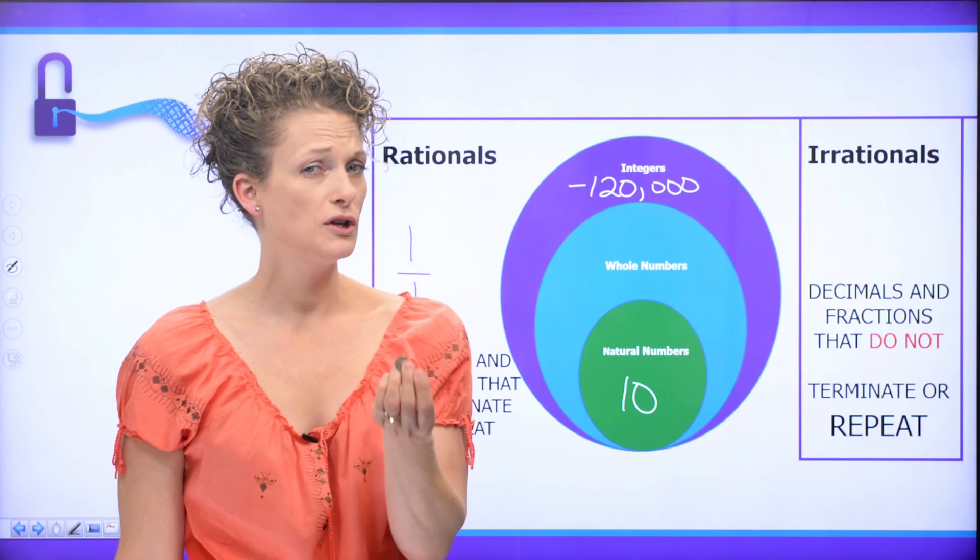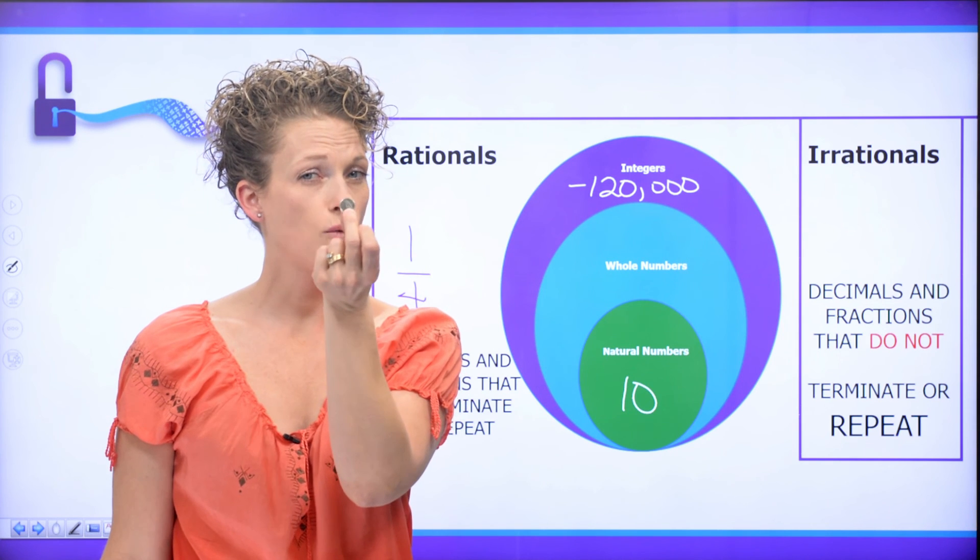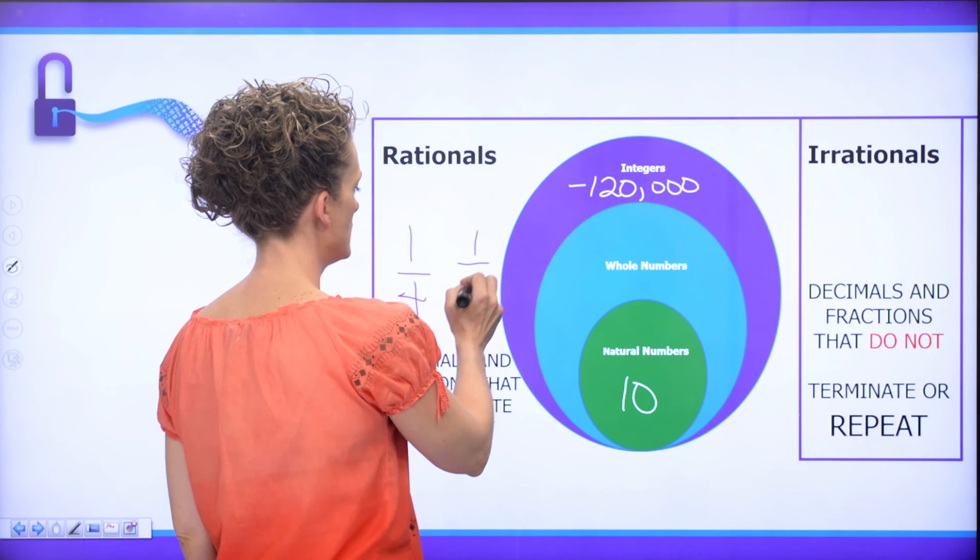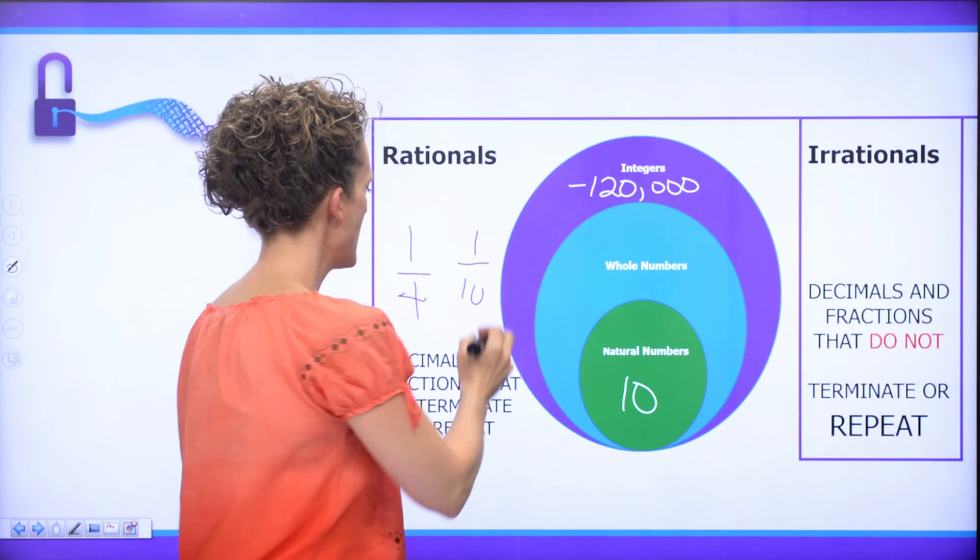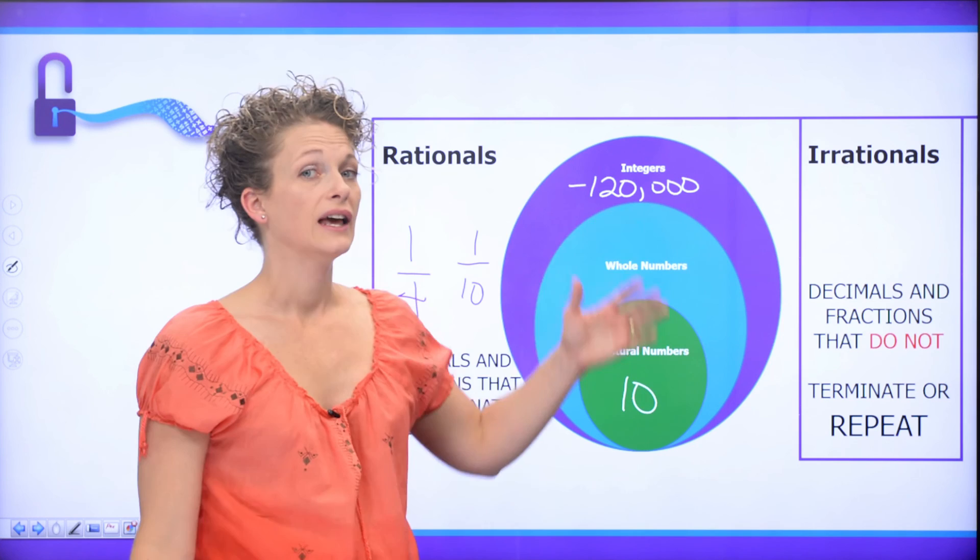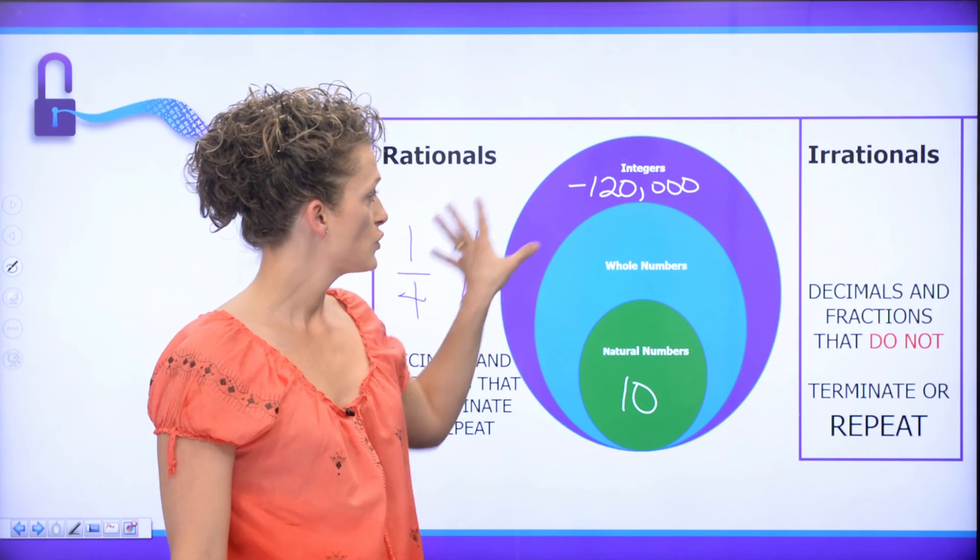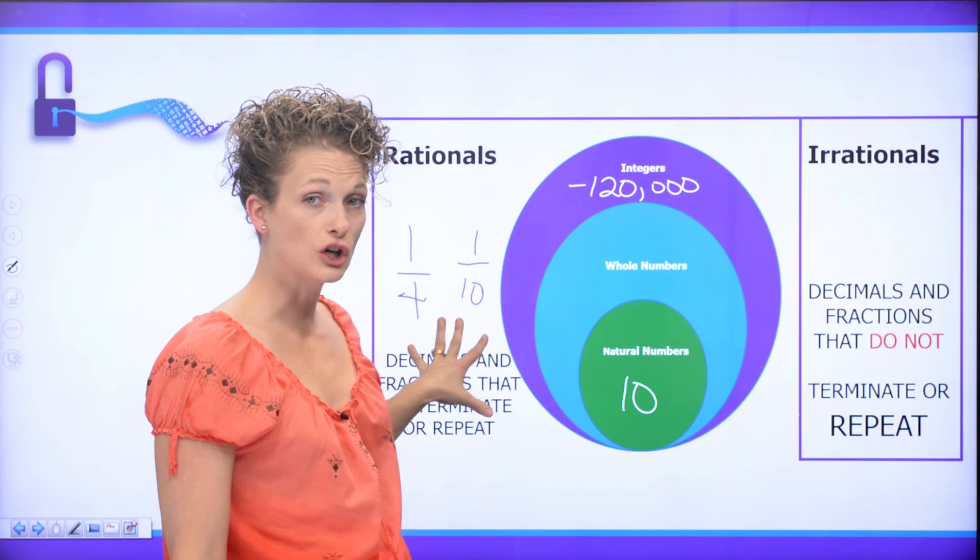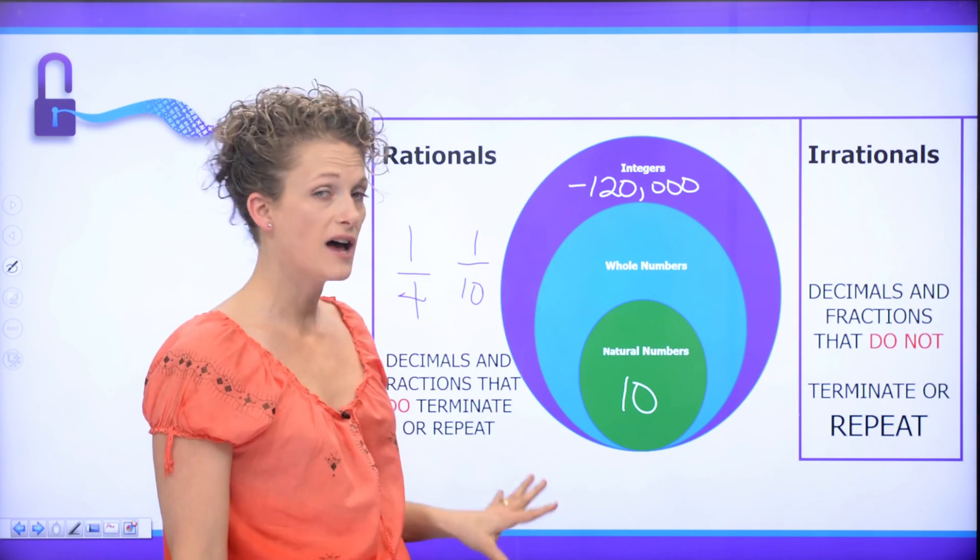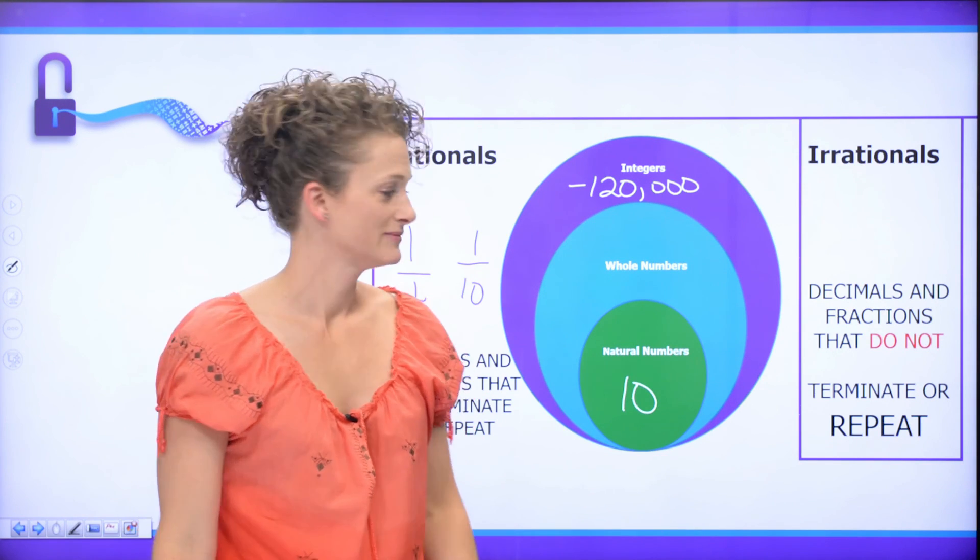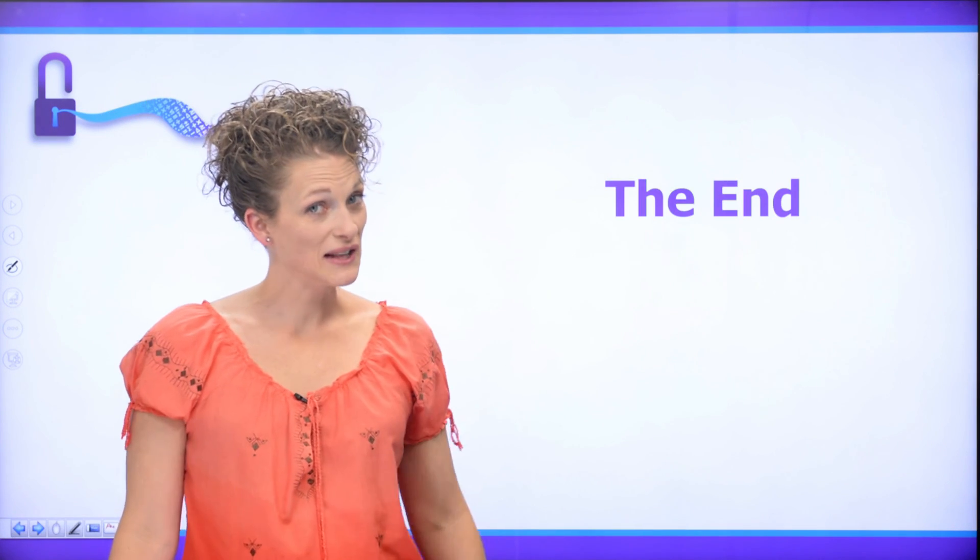And last but not least, how many dimes are in a dollar? Well, we know there's ten of them. So if I have one dime, it represents one-tenth of a dollar. So I have one-tenth, which is, again, it's a fraction. And it is also a rational number. So all of these numbers live inside of this picture in different spots. But they are all rational numbers. And that's our short lesson, introduction to rational numbers.